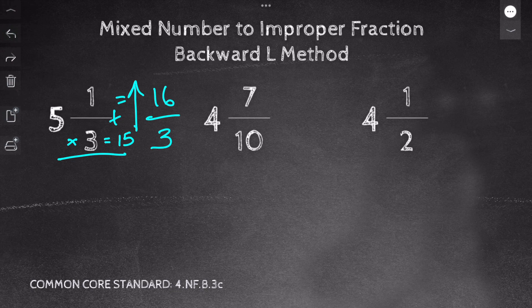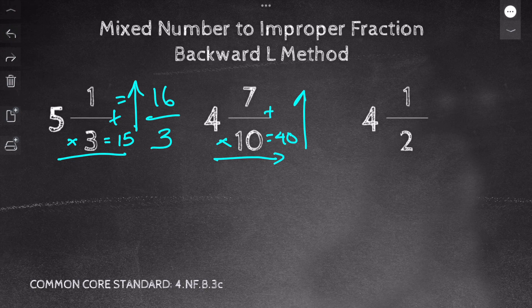My next problem is 4 and 7/10. I multiply 4 times 10, which equals 40. Plus 7 equals 47. And I keep my denominator of 10. So my answer is 47/10.